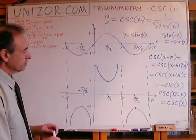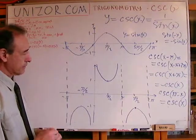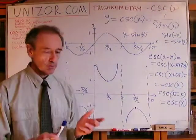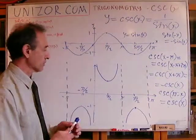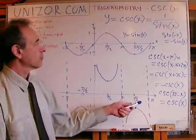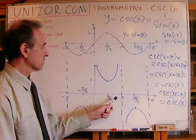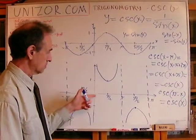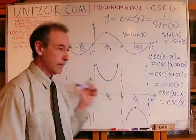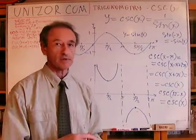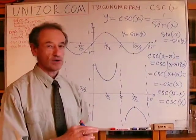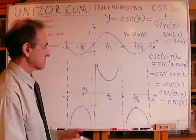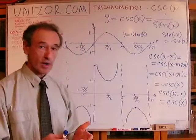What's important about this particular graph is that first of all, the domain of the function is real numbers except those which are multiples of π: 0, π, 2π, minus π, minus 2π, etc. These are all points where the function is not defined—it has asymptotes.